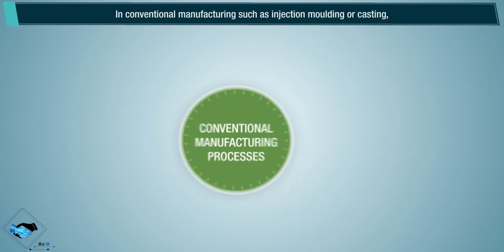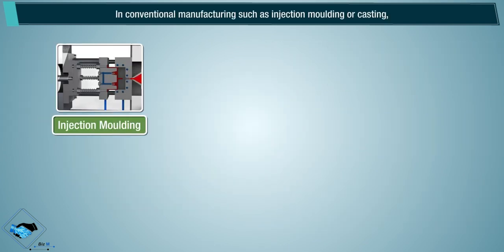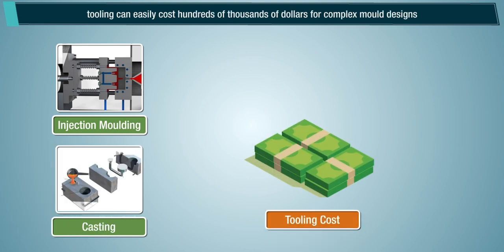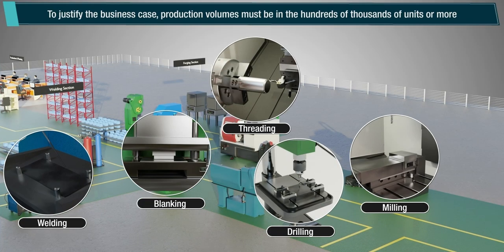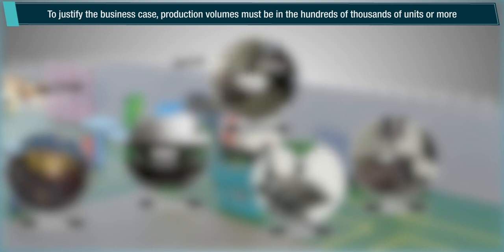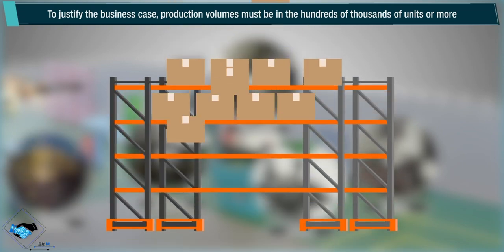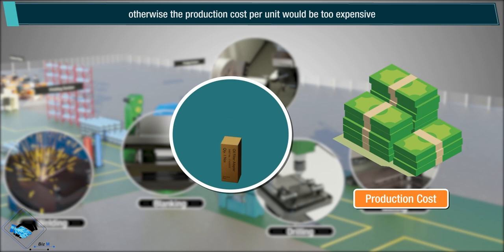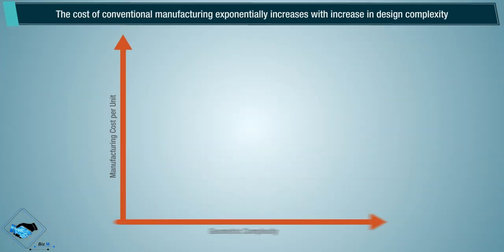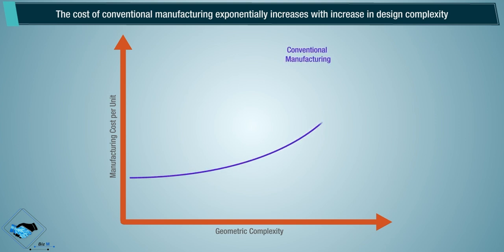In conventional manufacturing such as injection molding or casting, tooling can easily cost hundreds of thousands of dollars for complex mold design. To justify the business case, production volumes must be in the hundreds of thousands of units or more. Otherwise, the production cost per unit would be too expensive. The cost of conventional manufacturing exponentially increases with increase in design complexity.